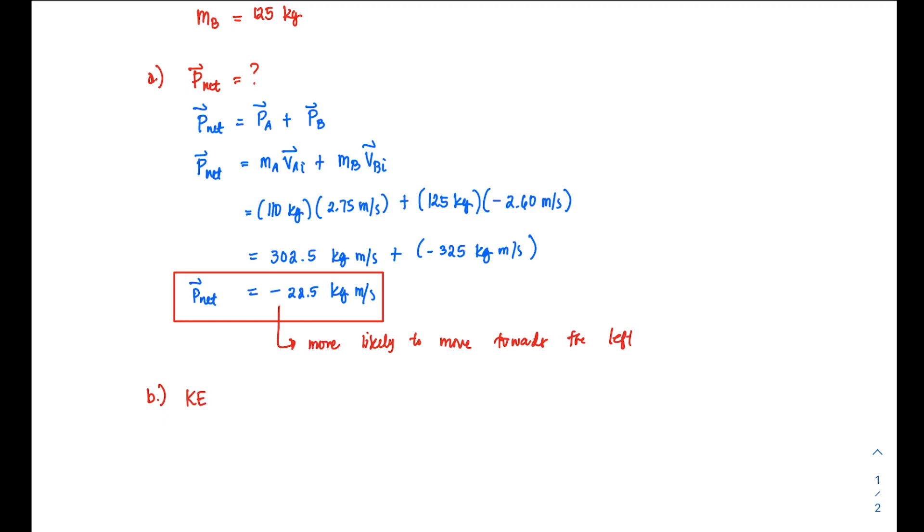have to add it vectorally. I'll just say KE_total is the sum of the kinetic energy of lineman A and the kinetic energy of lineman B. So from